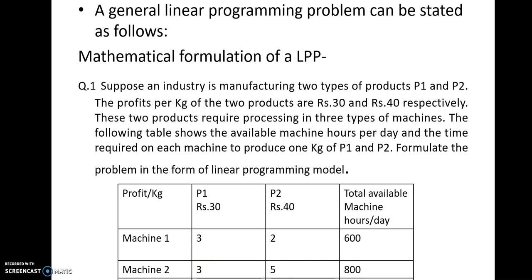A general linear programming problem can be stated as follows. Let's take an example. Suppose an industry is manufacturing two type of products, P1 and P2. The profits per kg of the products are given. These two products require processing in three type of machines. The following table shows the available machine hours per day and the time required on each machine to produce one kg of P1 and P2. Formulate the problem in the form of linear programming model.